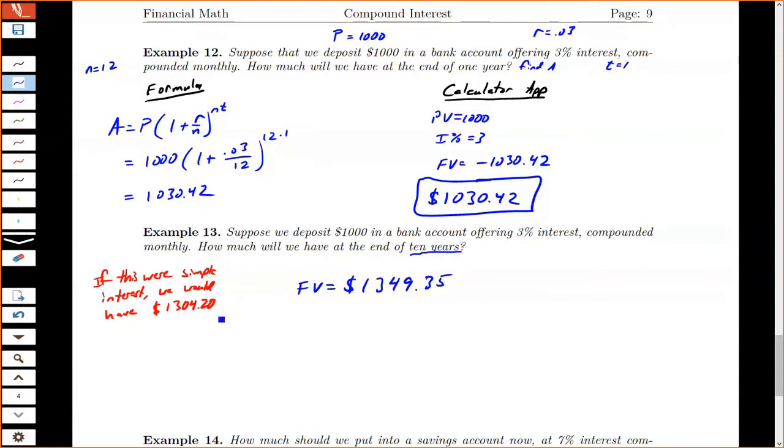So you'll notice that that's more money than simple interest. And the reason that it's more is because every month, the amount of interest is getting put into our account, and we're getting interest on that interest.